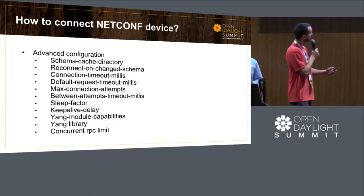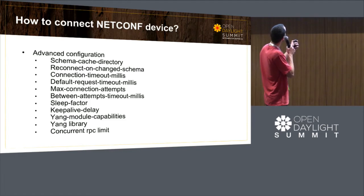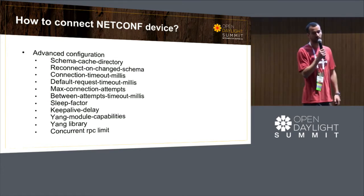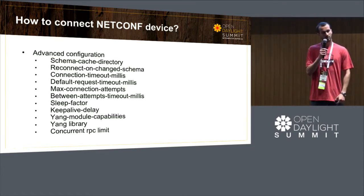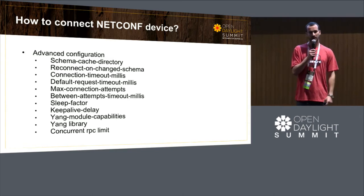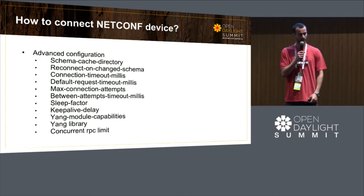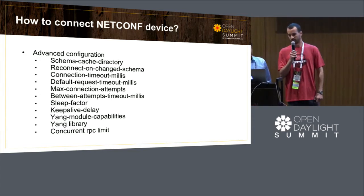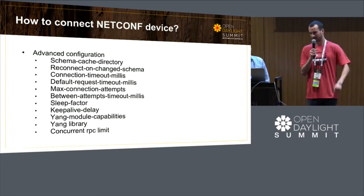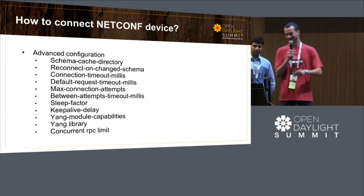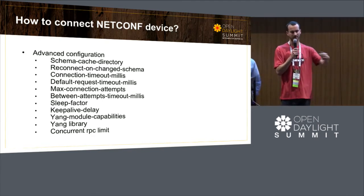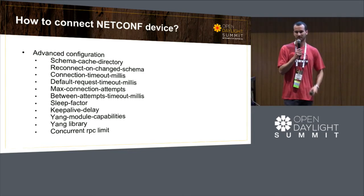The three configuration options — connection timeout, default request timeout, and max connection attempt — let you manage the way you want OpenDaylight to connect to your netconf device and how and when to fail if it doesn't mount. There is also a default request timeout: when you're sending a request to your netconf device, if in a given number of seconds it hasn't replied, you can fail the request.